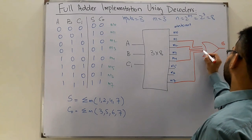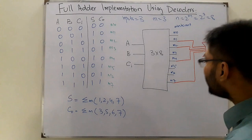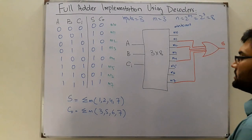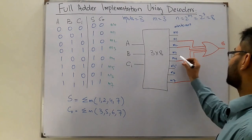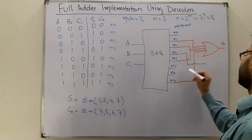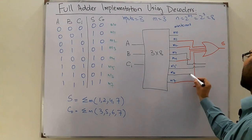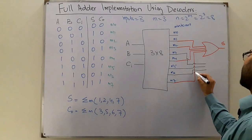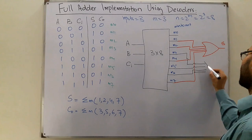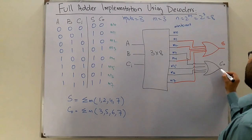And for the carry, what do you have? For the carry you have 3, 5, 6, and 7. So this is your 3, this would be 5, 6, and 7 from here directly. This is another OR gate and this will give you your carry output.